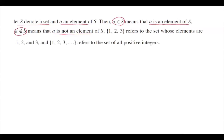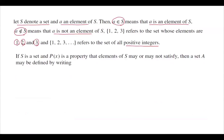Consider these two sets: the set including one, two, three, or the set of all positive integers. As you can see, one, two, and three are members of these sets. If S is any set and P(x) is a property — like x squared is greater than or equal to x, or 2x plus 1 equals 0, or any other property from algebra, pre-calculus, or calculus — then a set A might be denoted in a special way.